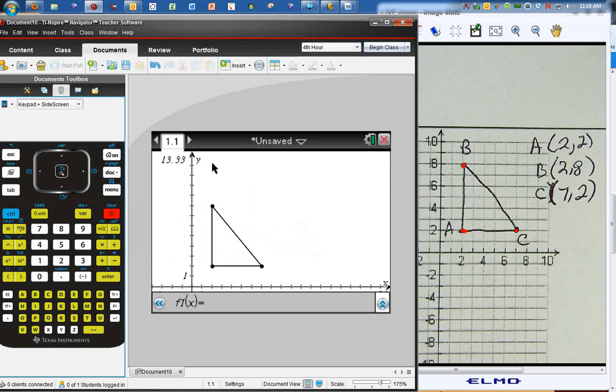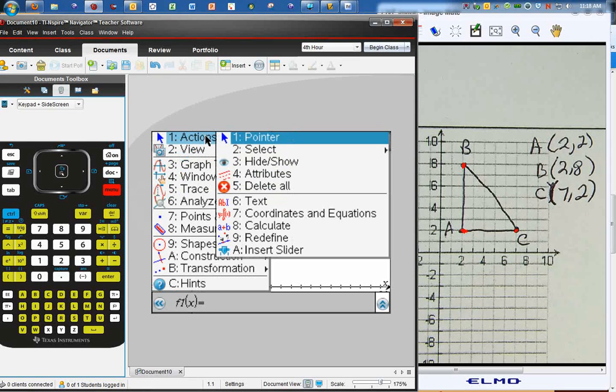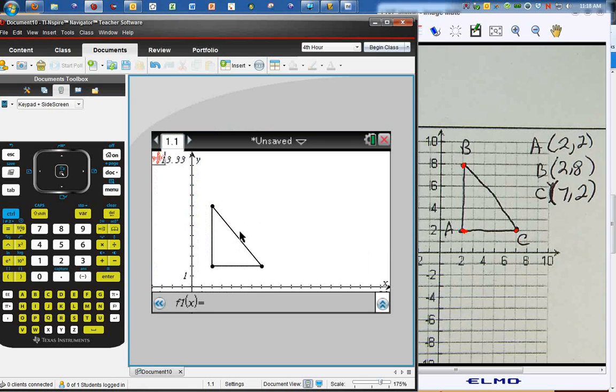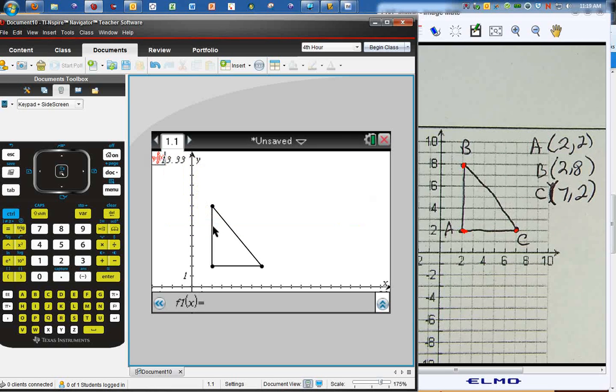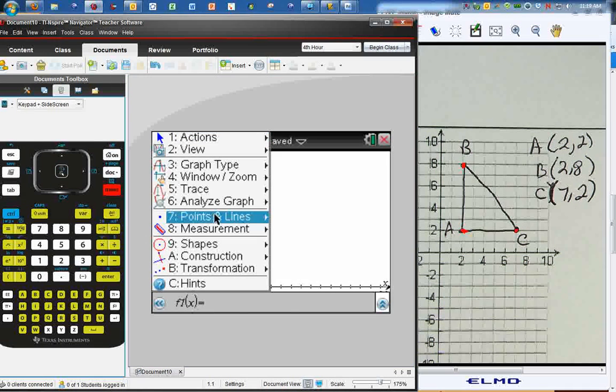Now, if you want the lines, the equations of the lines that make up the triangle here, you can hit menu. Go to Actions and go to Coordinates and Equations. And, well, nothing's happening. So, obviously there are no lines. So what we'll do is, we'll go to Lines.